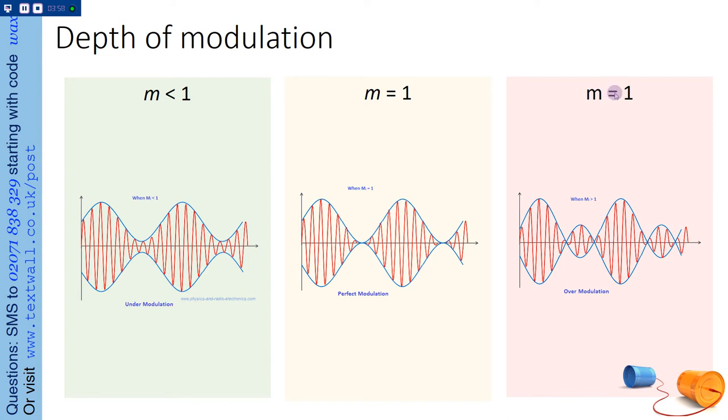There's a typo there. I'll fix that in a second. Okay, so M greater than 1 is over-modulation.